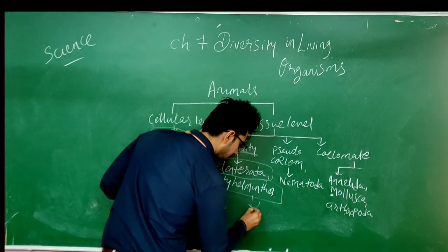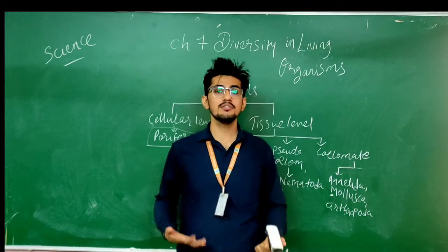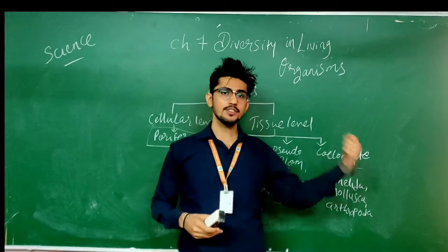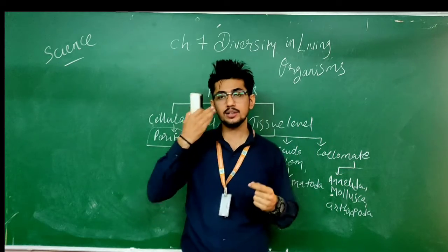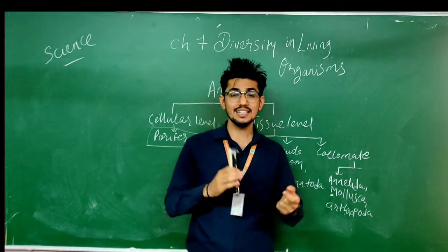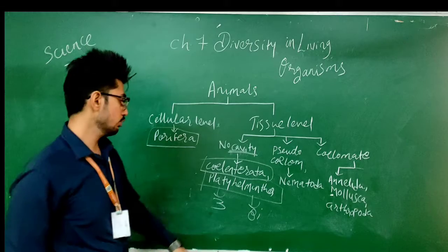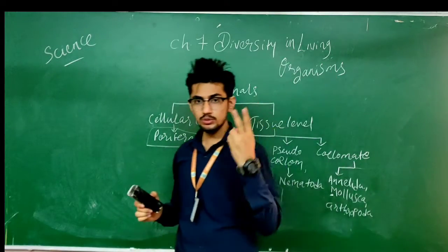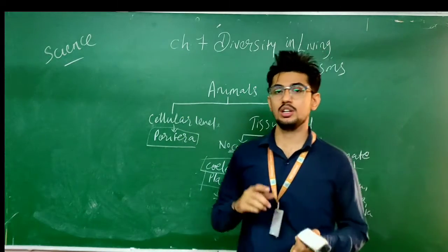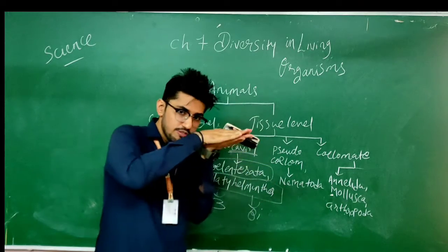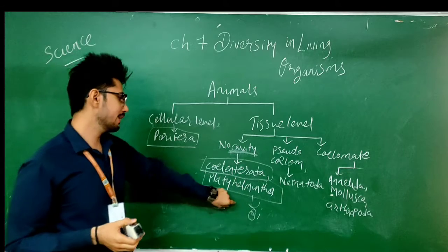Platyhelminthes are bilaterally symmetrical. What does bilaterally symmetrical mean? For example, as a human, I am also bilaterally symmetrical — if someone cuts me from the center, my left and right body will look similar. Both body parts will look similar. So if I cut it from the center, this means it is bilaterally symmetrical. So Platyhelminthes are bilaterally symmetrical organisms. Two new terms we learned: triploblastic and bilaterally symmetrical. Another thing to note is that Platyhelminthes have a very flat body structure — they are dorsoventrally flat.